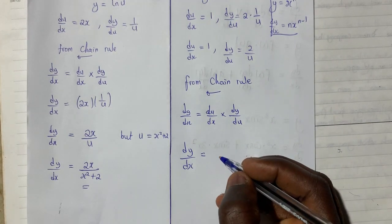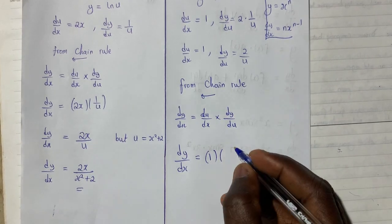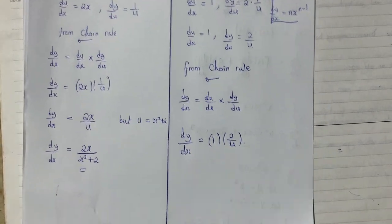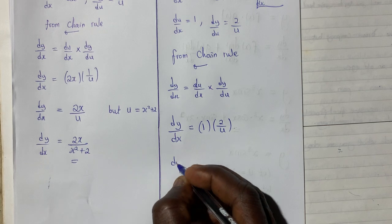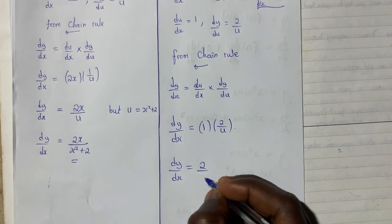Giving me 1 multiplying the next one is 2 over u, which is dy du. The result we produce is dy dx giving us 2 over u.